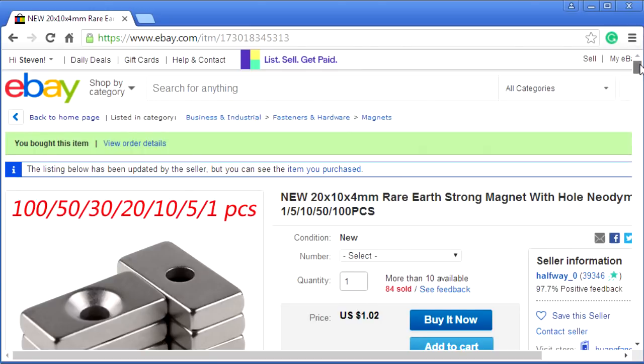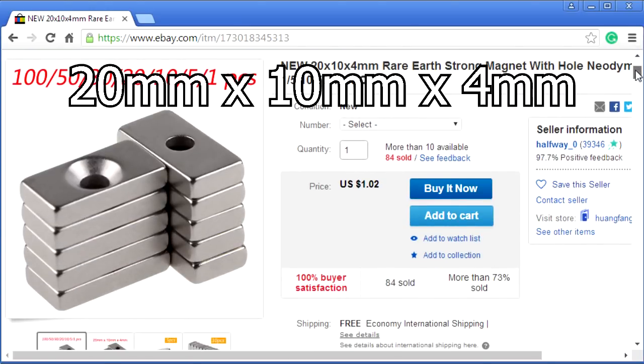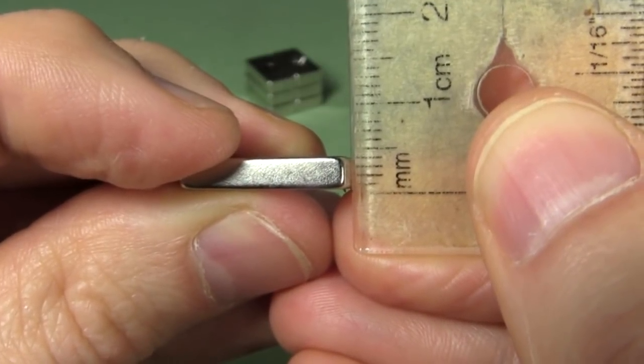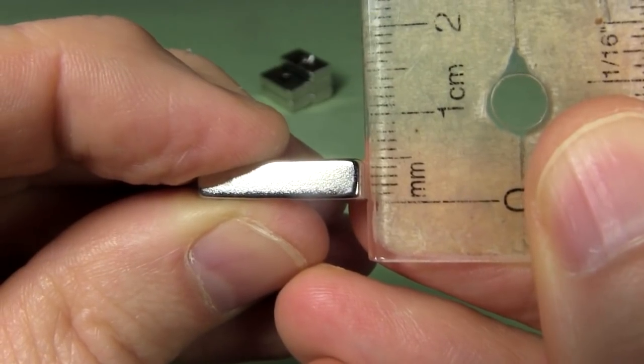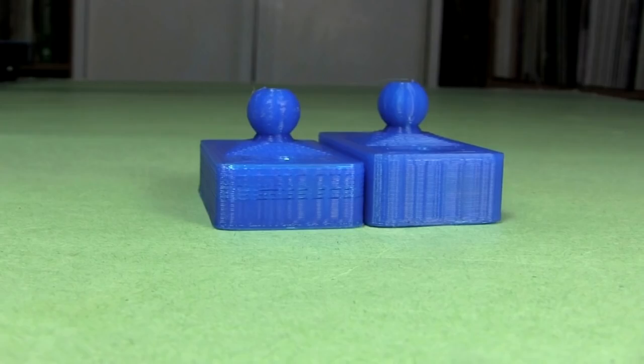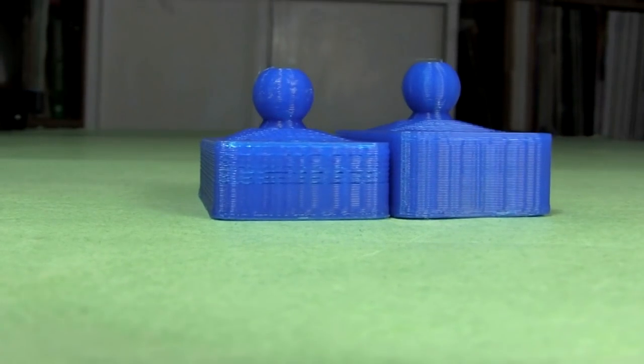The magnets come from eBay and are supposed to be 20mm x 10mm x 4mm. Some which I bought in the past were actually 4mm, but these latest ones I bought turned out to be 5mm. So I have 3D printed files for both sizes.